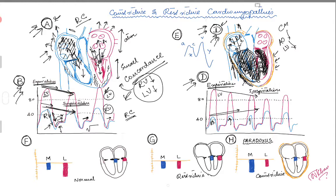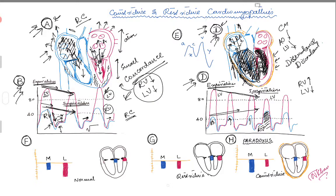This arrow is showing that during inspiration there is more right ventricular filling. But look at the red waveform — the LV waveform — as the RV filling goes up, the LV filling is going down. This is called the discordant waveform.